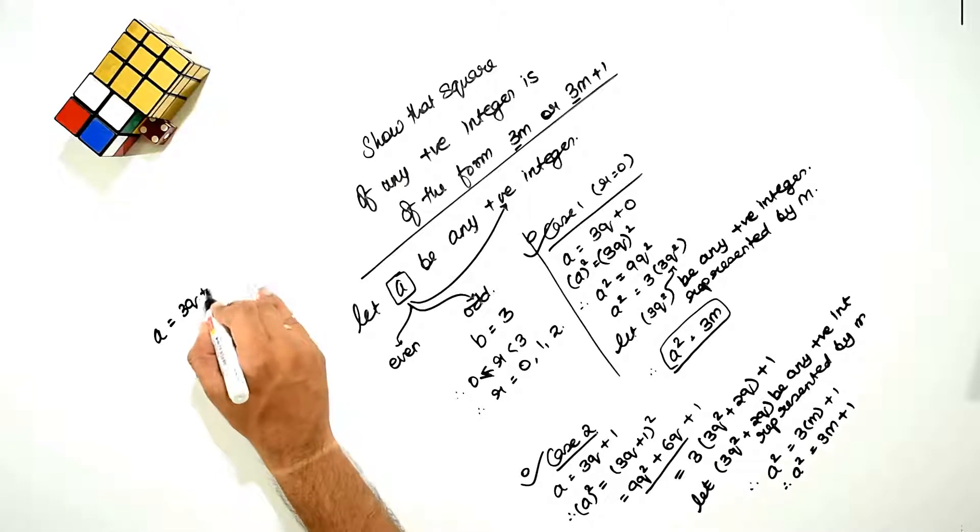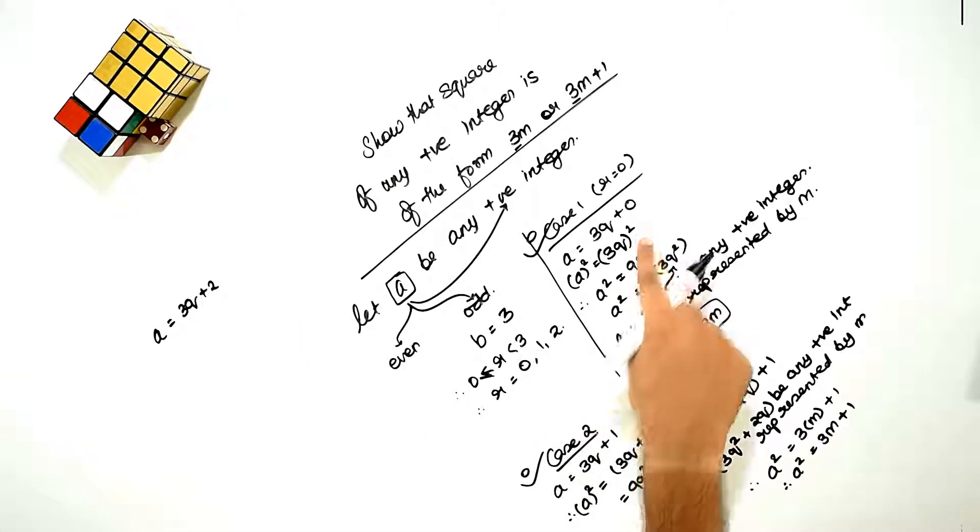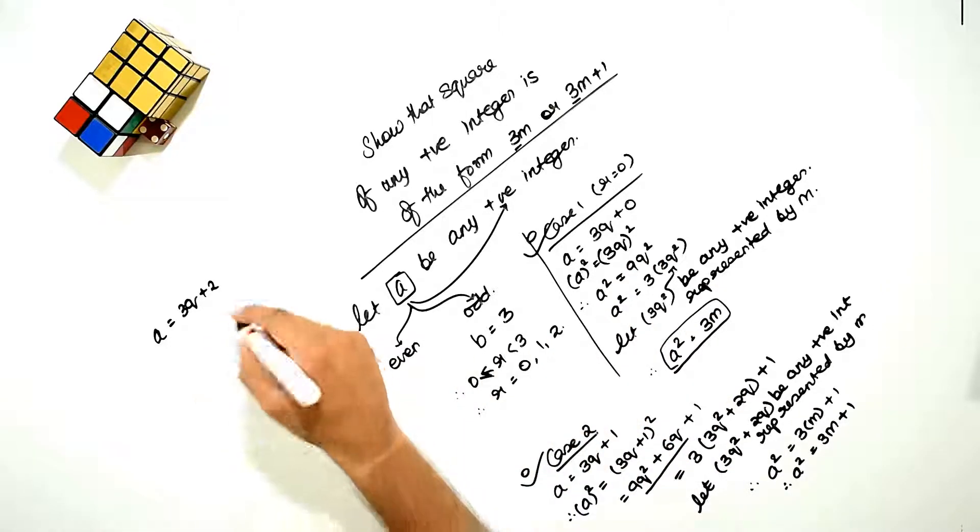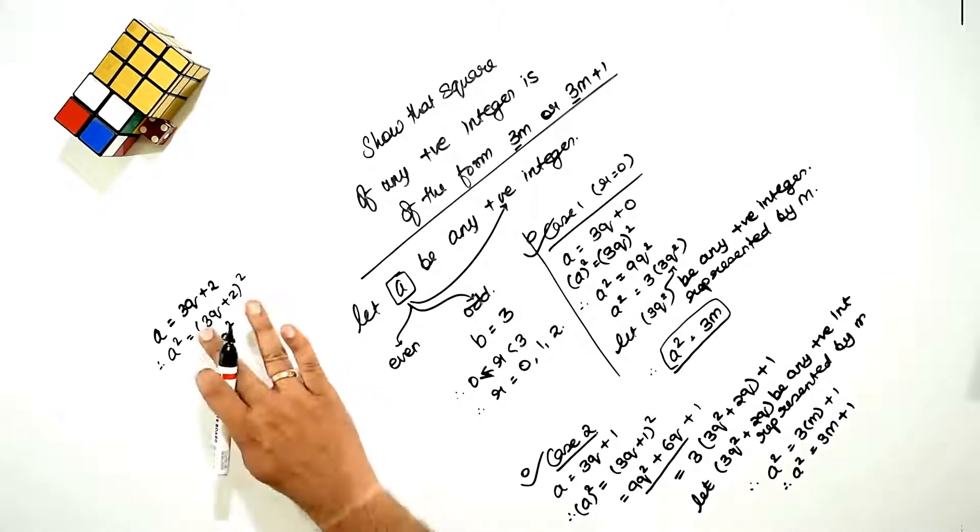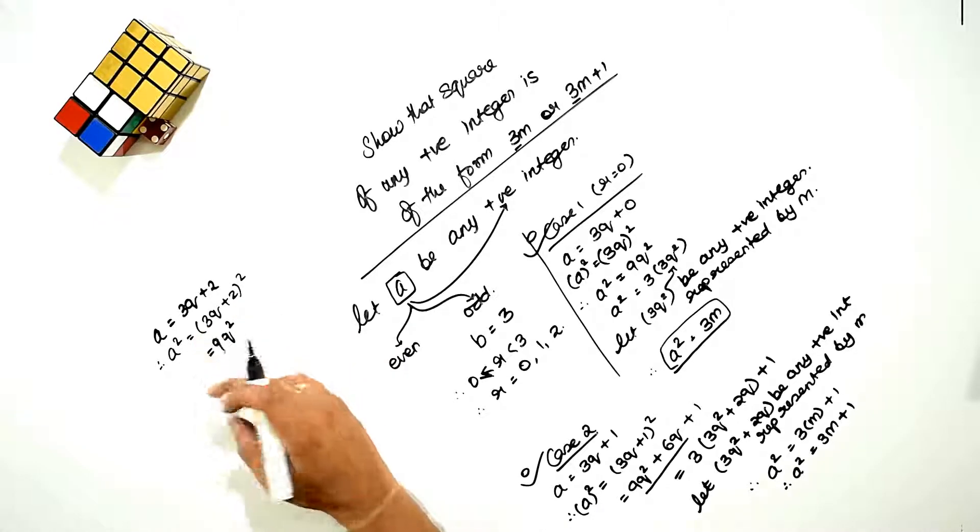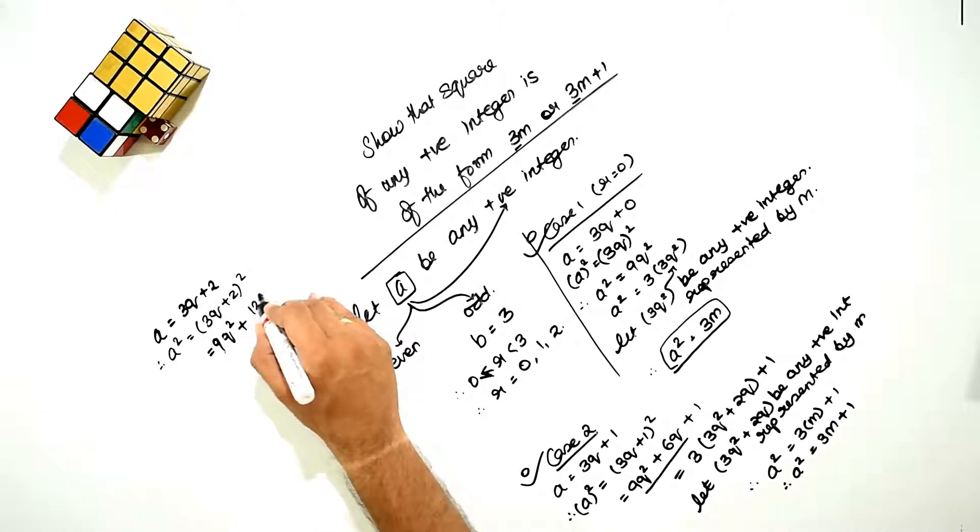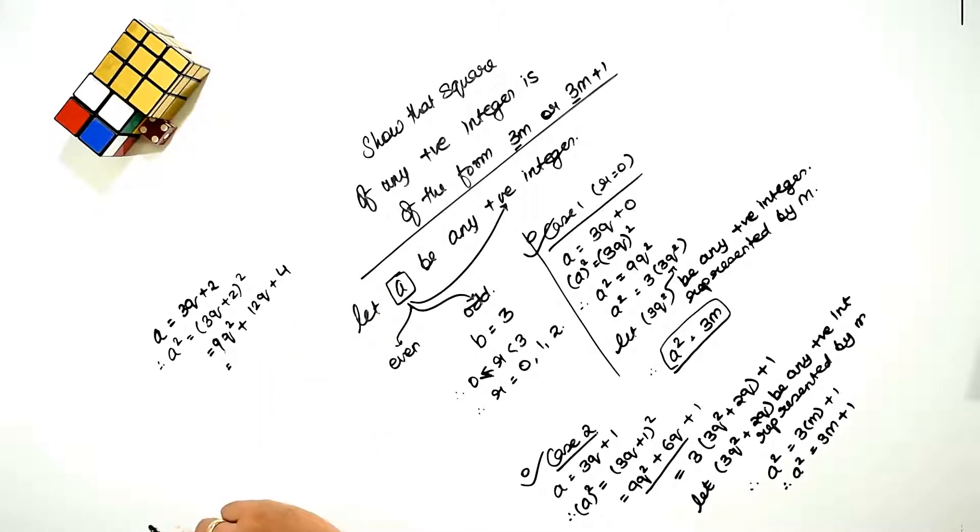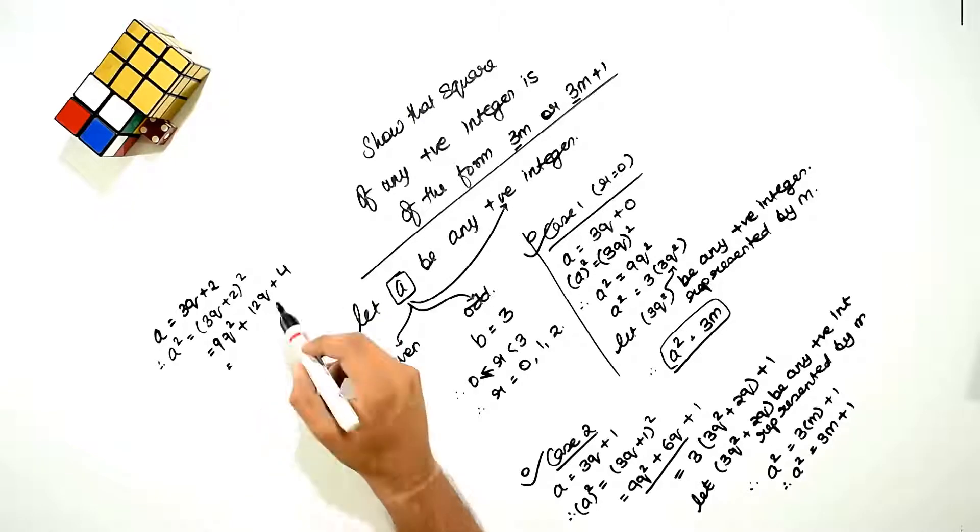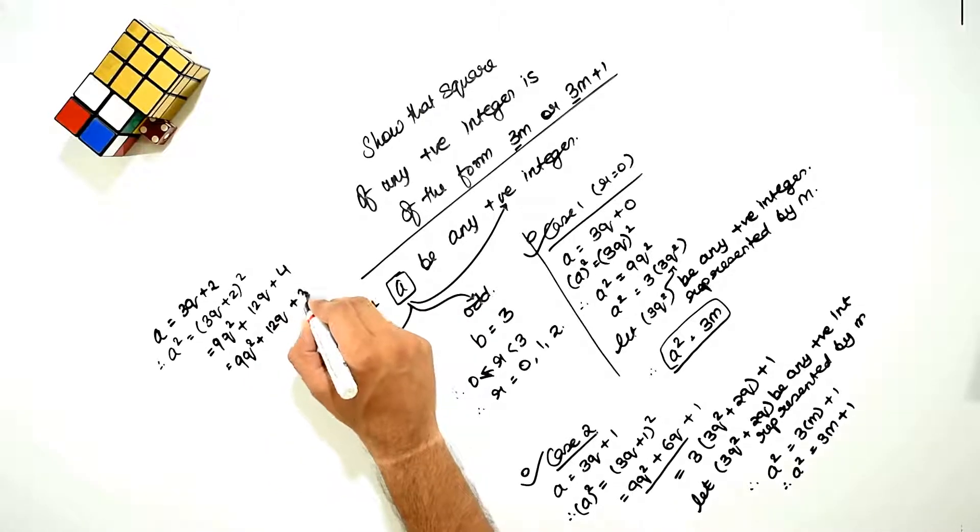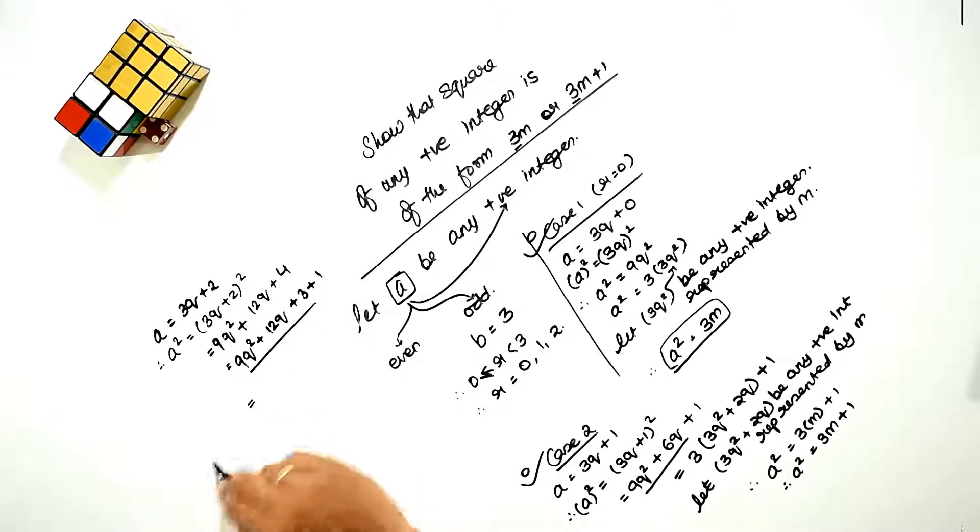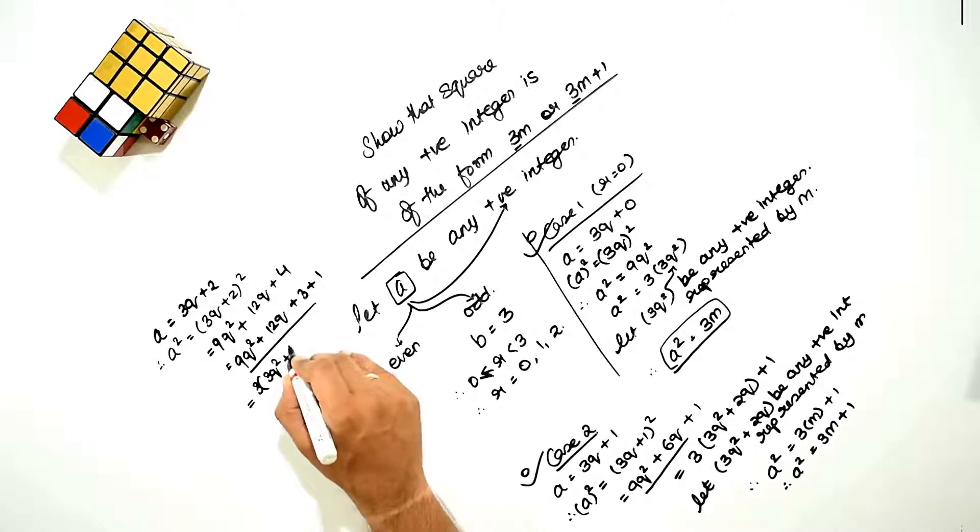a is equal to 3q plus 2. The remainder can be 0, 1, or 2, so we have solved 0 and 1, now remainder 2. If a is equal to 3q plus 2, then a square will be 3q plus 2 whole square, which is equal to 9q square plus 12q plus 4. Now we have a problem here. We can split 4 as 3 plus 1. Now we can take out 3 as common: 3 times (3q square plus 4q plus 1) plus 1.